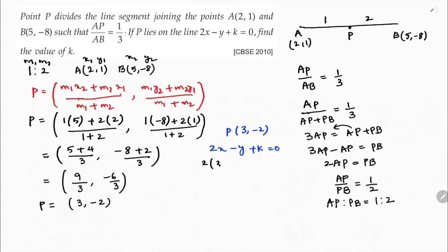2 into 3 minus y is minus 2 plus k equals 0. 6 plus 2 plus k equals 0. 8 plus k equals 0. k equals minus 8.